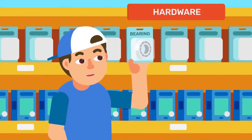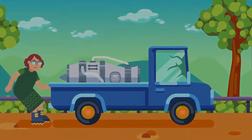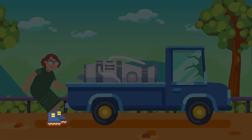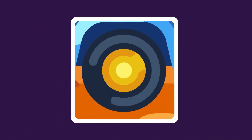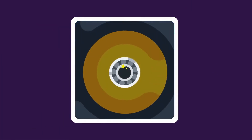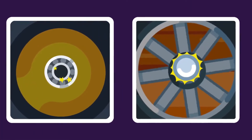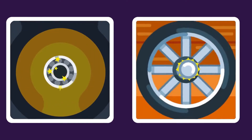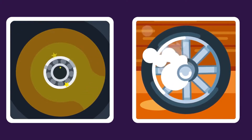Ball bearings are used to reduce friction between moving parts of cars, machines, and inline skates. Placed between moving parts, ball bearings roll around and prevent moving parts from rubbing against each other. This reduces the wear and tear of these parts.